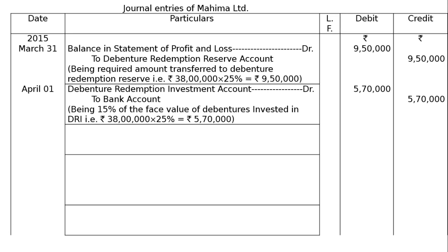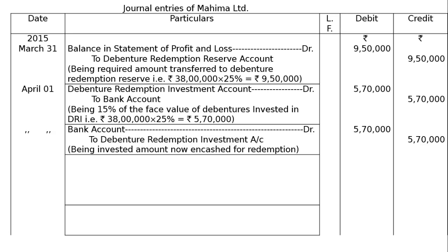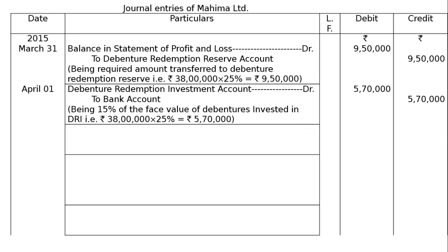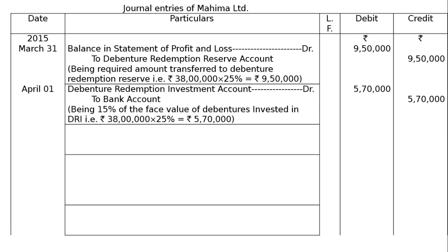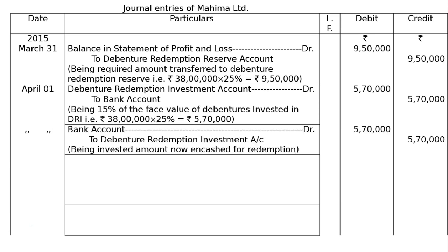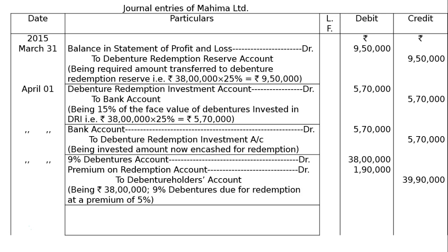Then we have to take out the money by selling the investments — that is, Bank account debited to Debenture Redemption Investment account. Same amount, being investment realized in cash for redemption.